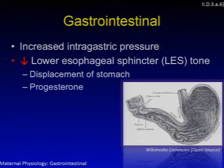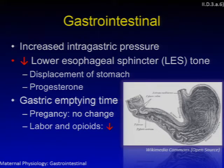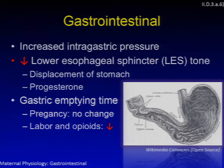There are GI changes as well: increased intragastric pressure and a decrease in lower esophageal sphincter tone, primarily due to displacement of the stomach and a progesterone effect. Gastric emptying time is important to know — pregnancy itself does not change gastric emptying time. However, the onset of labor, associated with release of endogenous opioids, and the administration of exogenous opioids will decrease gastric emptying time.